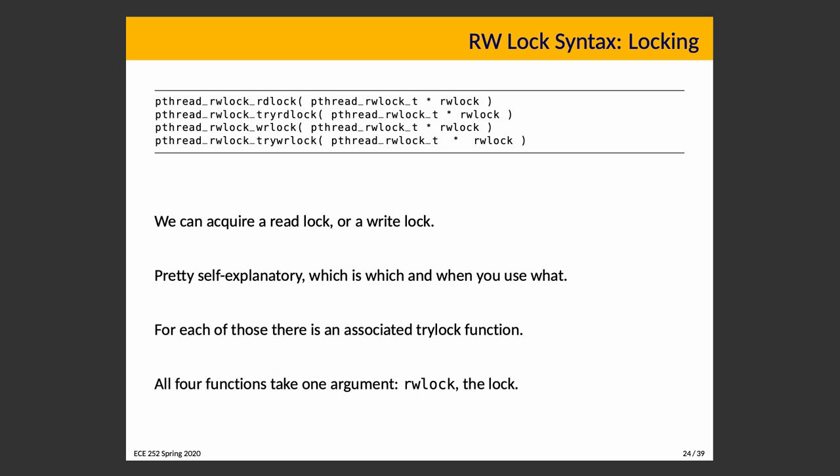We can acquire either a read lock or write lock — those are self-explanatory. If you are only going to read, you acquire a read lock. If you are going to read and write, you acquire a write lock. For each of those there is an associated trylock function — we are not quite prepared to talk about trylock, so file that away for later. All four lock functions take exactly one argument: the lock you intend to lock. In theory, the same thread can lock the same rwlock multiple times with rdlock, but you should remember to unlock it multiple times as well.